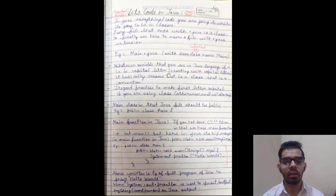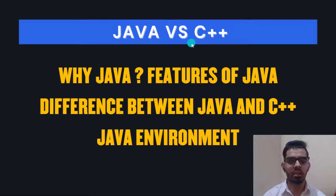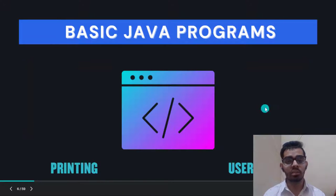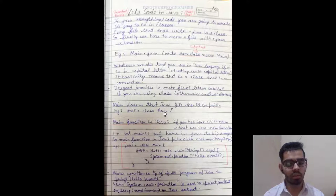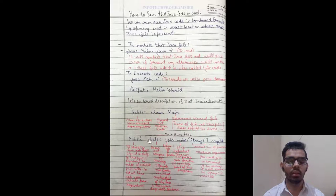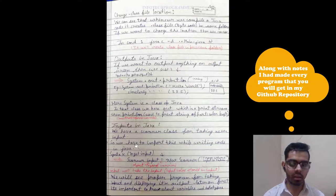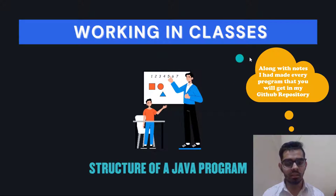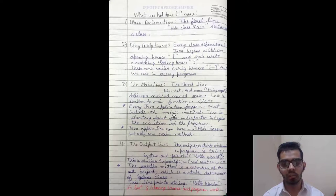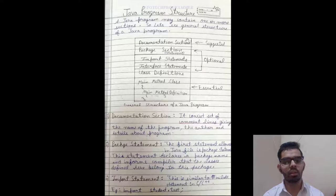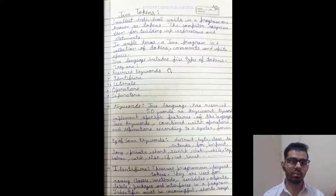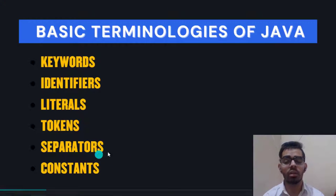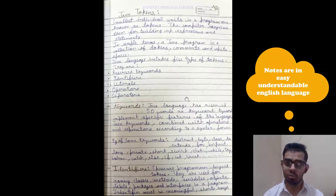Next in the roadmap is basic Java programs — printing output and taking user input. I've discussed in my notes how to code in Java, what the main function is, how to run code via CMD, what an IDE is, how to output in Java, and how to take input. We also cover working with classes, the structure of a Java program, and basic terminologies like keywords, identifiers, tokens, and separators.